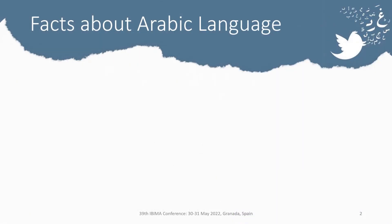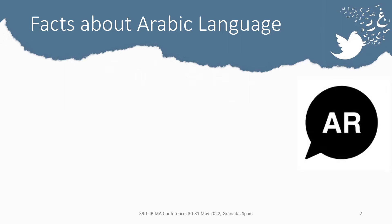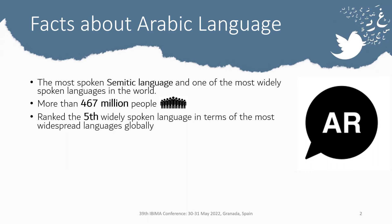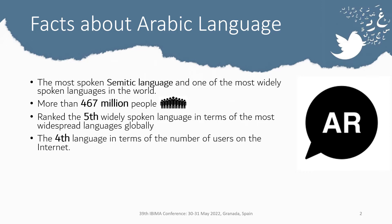To understand the importance of this article, let me give a brief introduction and some facts about the Arabic language. Arabic is the most spoken Semitic language and one of the most widely spoken languages in the world, with more than 467 million speakers globally. It is ranked the 5th most widespread language and the 4th language in terms of internet users.